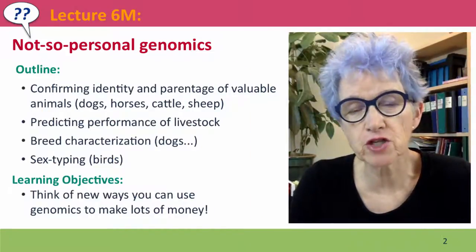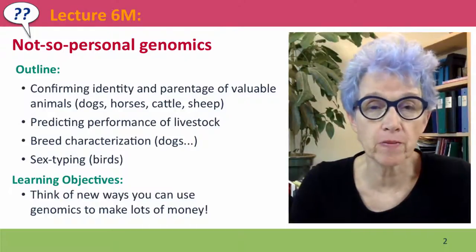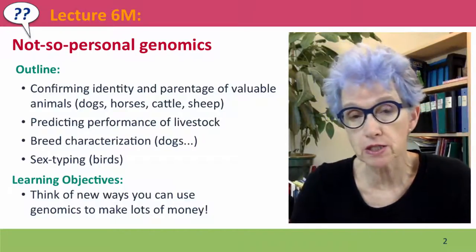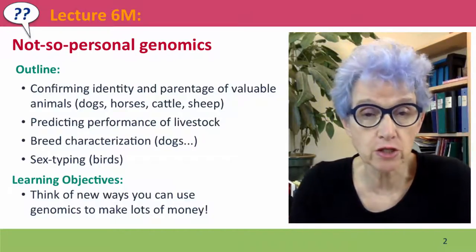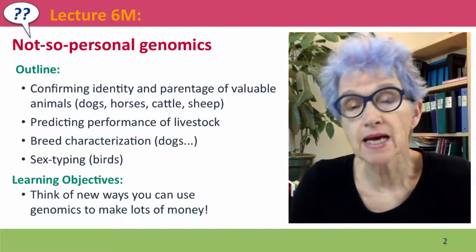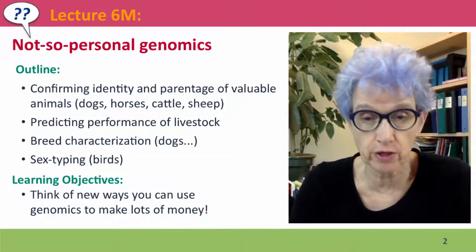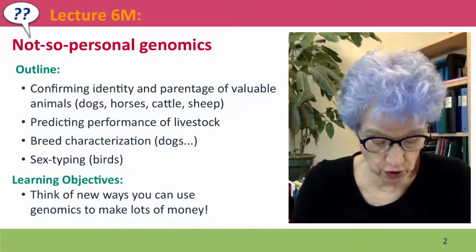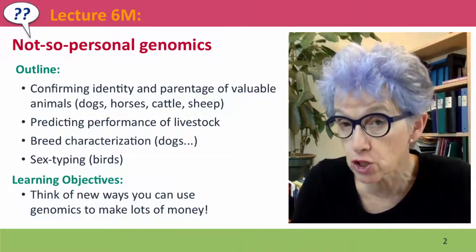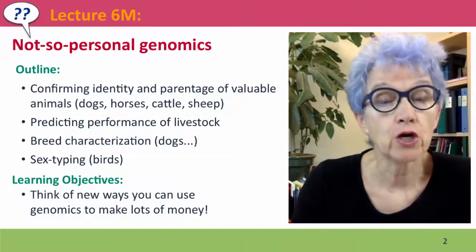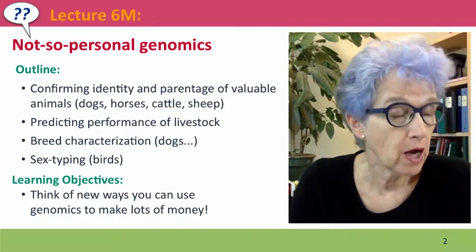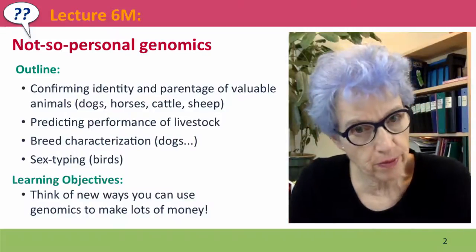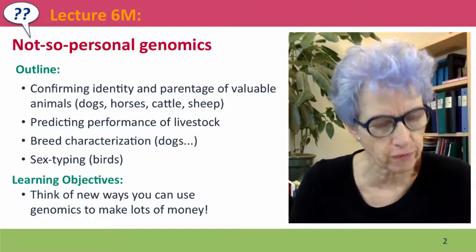Hi everyone, welcome back to Useful Genetics. This is lecture 6M where we're going to make the switch from talking about the personal genomics of humans to talking about how the same genomic technologies can be used to analyze the organisms that we care about, in particular livestock and pets. We'll talk about using various forms of genome analysis to confirm identity and parentage of valuable animals, to predict the performance of livestock, to tell which breed our dog is, and what sex our bird is, and some surprising things you might not have thought of.